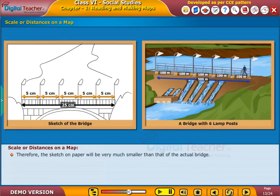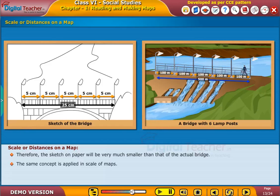Therefore, the sketch on paper will be very much smaller than that of the actual bridge. The same concept is applied in scale of maps.